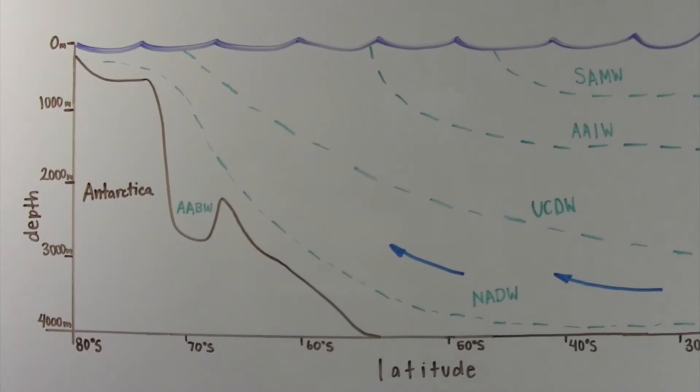The deep waters rise to the surface and upwell along the coast of Antarctica driven by strong winds in this region that push the surface waters.